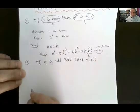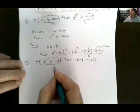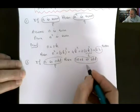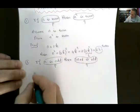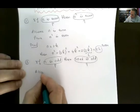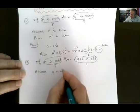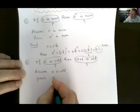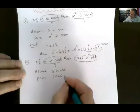This is p and this is q. So assume — or suppose — n is odd. Prove 5n plus 6 is odd.